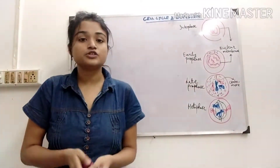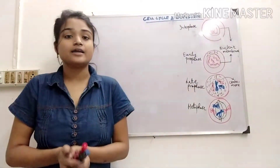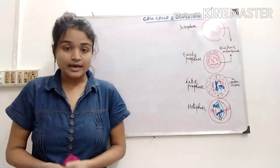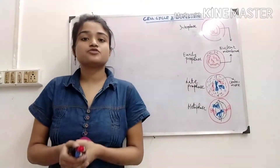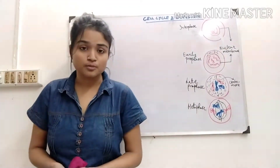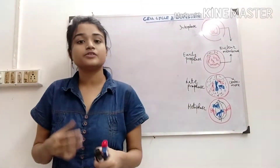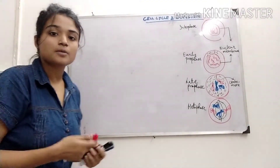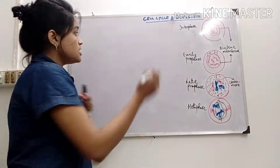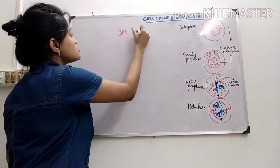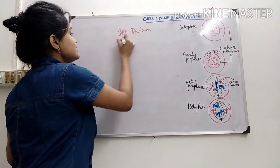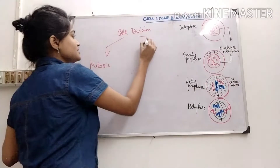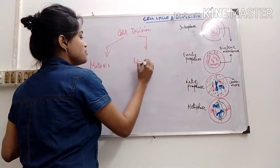In this lecture, we will talk about cell division and its different phases that occur in the cell cycle. In my last lecture, I discussed the structure and function of chromosomes, the DNA and the different components that make up the DNA. Now, cell division is of two types: mitosis and meiosis.